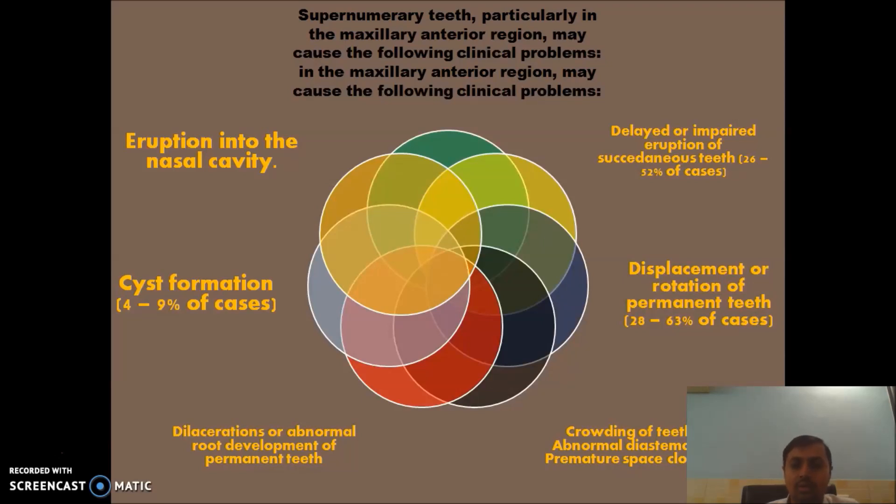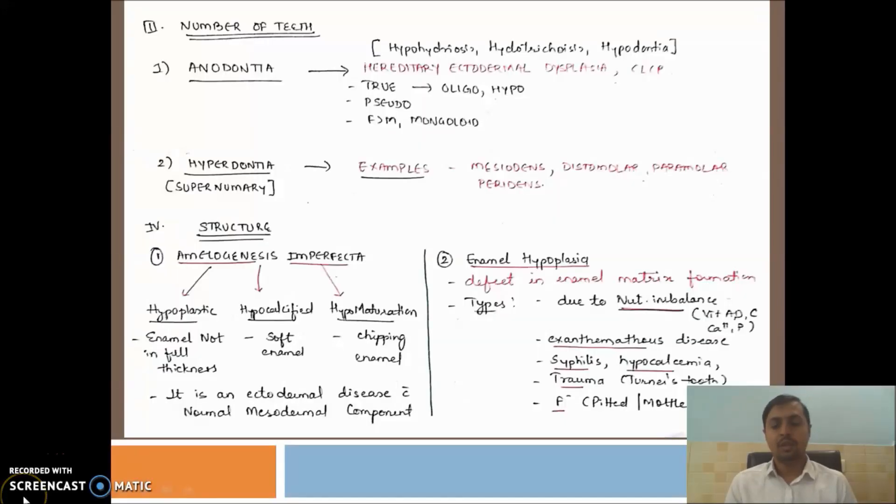Now we can see the clinical problems caused by supernumerary teeth. Mostly in the exam, they ask the question in which all four options are there, but you have to select most apt option. Whenever in case of supernumerary teeth, the most common problem is displacement or rotation of permanent teeth. Followed by delayed or impaired eruption of supernumerary teeth. Then other causes like crowding, diastema, cyst formation, and rarely eruption into the nasal cavity.